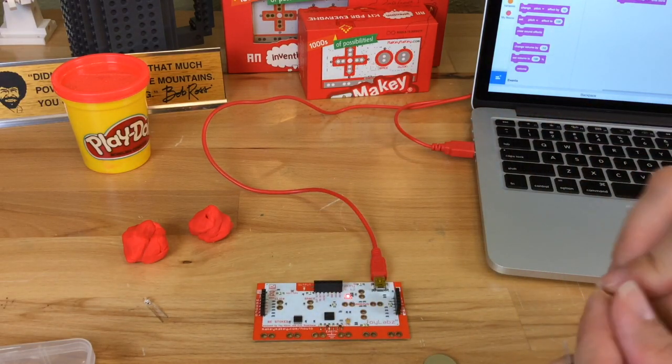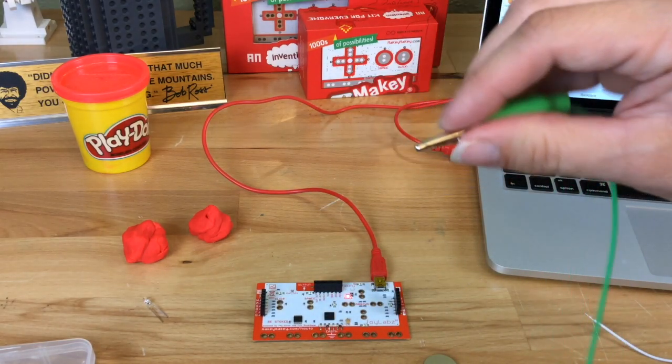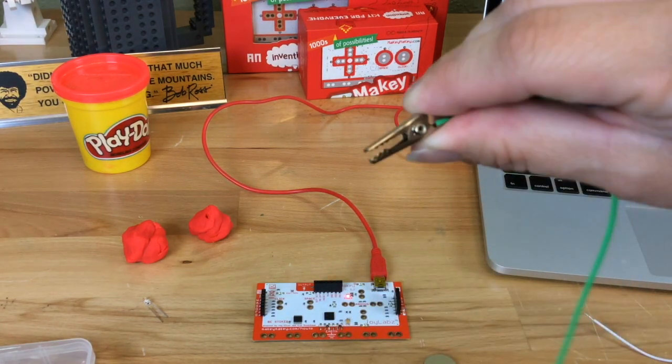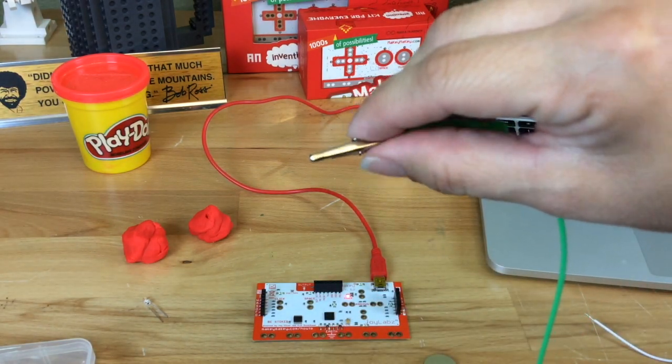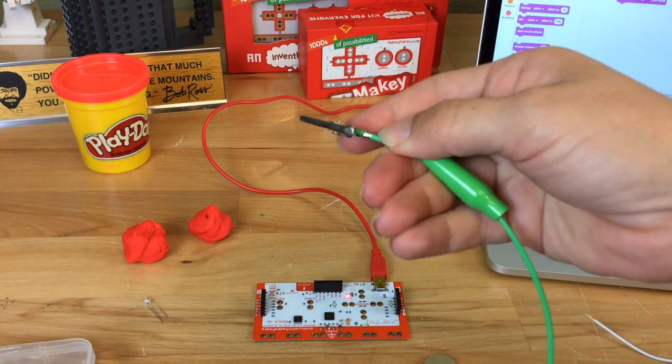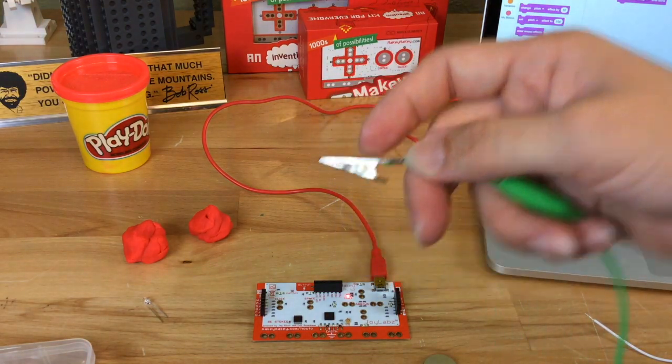This is really the same as this. Jumper wire is the same as an alligator clip. It's just the alligator clip has this head on it, but inside of it it's just a wire that connects to the alligator head that makes everything work.